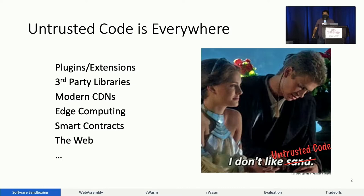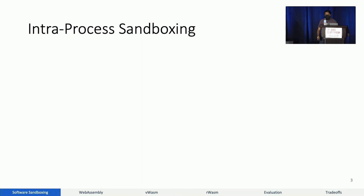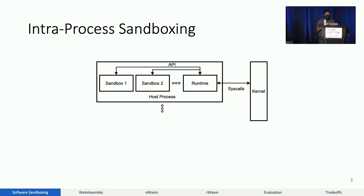How do we do this? The security community has come up with all kinds of different approaches to handle untrusted code, one of which is software sandboxing. In this talk, I will be focusing on intraprocess sandboxing — where you take a bunch of different bits of code, put them into sandboxes of their own, and these sandboxes can only communicate or work with their environment through a series of trusted APIs.